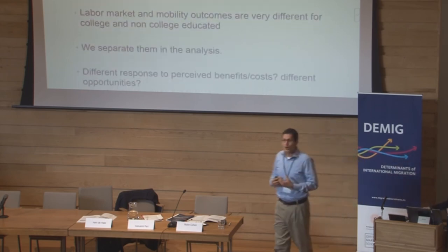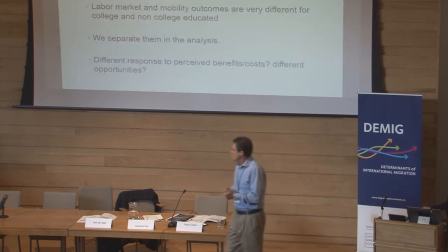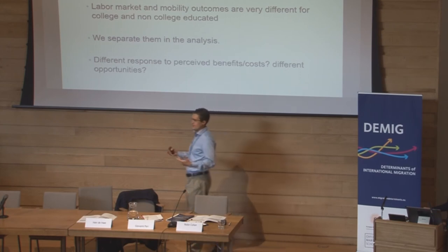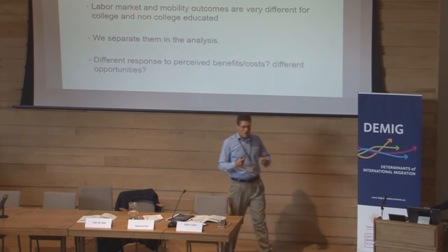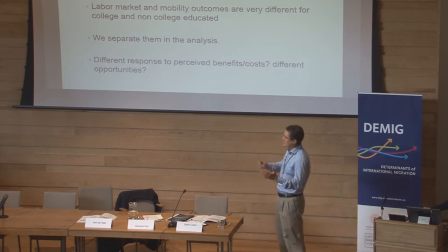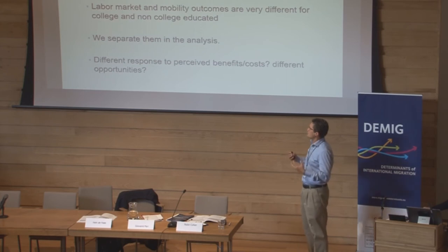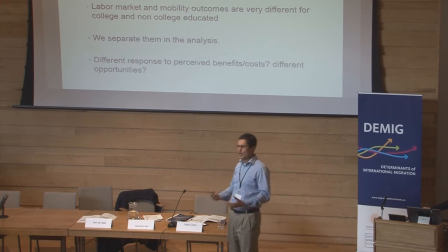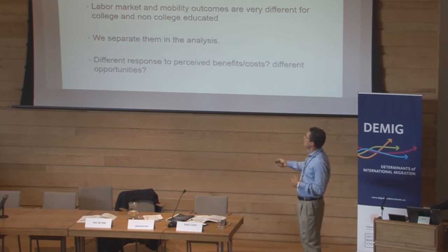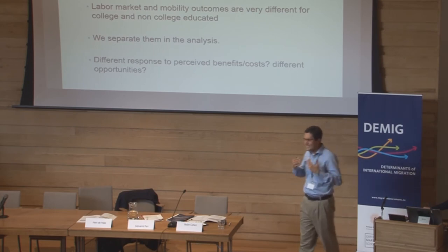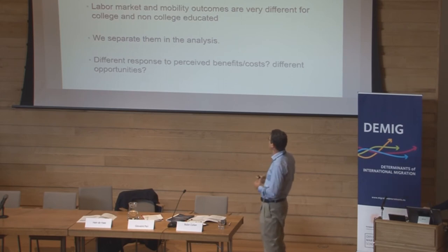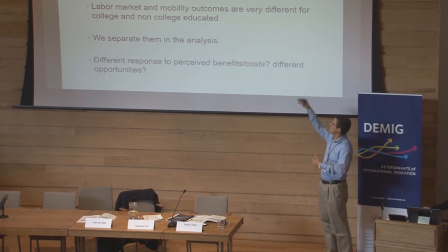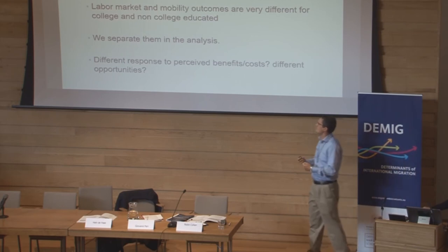A key distinction was in the migration behavior of people with different education levels. In particular, tertiary versus non-tertiary education seems crucial and goes with many other labor market differences in wage and earnings potential between college and non-college workers. We decided that to say something about the selection of migrants, we would always split these two types of population and look at different responses of these two groups, both as potential migrants and actual migrants.